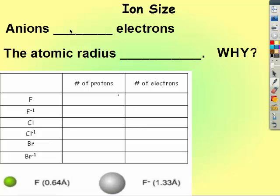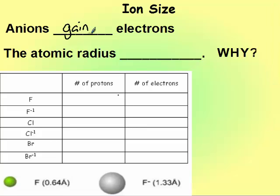Anions gain electrons. Therefore the atomic radius increases. Fluorine has nine protons, nine electrons. Fluorine ion has nine protons, ten electrons.